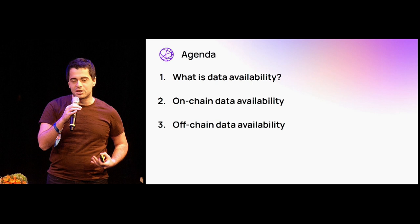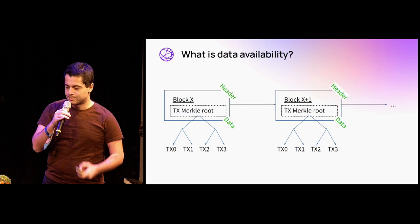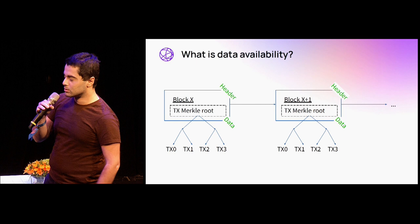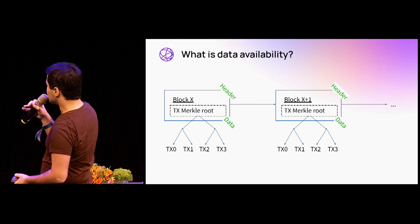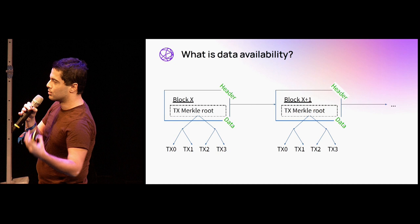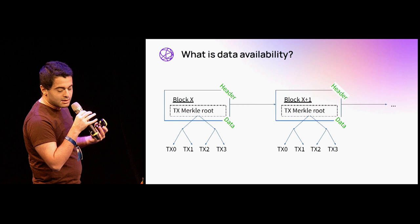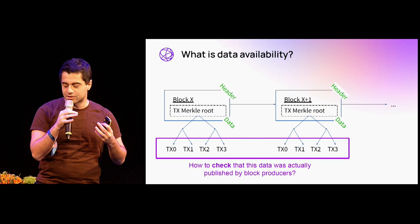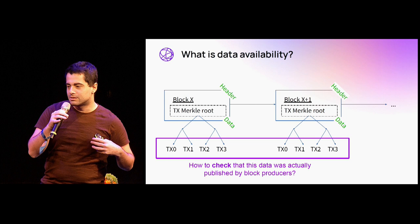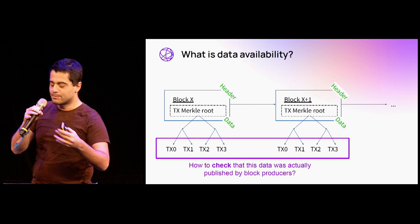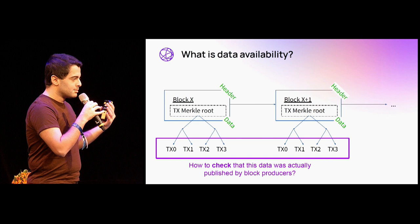What is data availability? All blockchains, including roll-up chains, consist of two main components: the block header and the actual transaction data. The block header commits to the transaction data, usually in the form of a transaction Merkle root. The question of data availability asks: if you're a node or a program that only downloads the headers, how can you check that the transaction data the header points to was actually published by the producers of that block? If they only publish the header but not the actual data, then no one knows what the actual transactions behind that block header are.